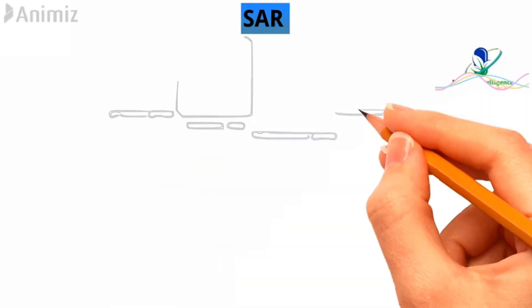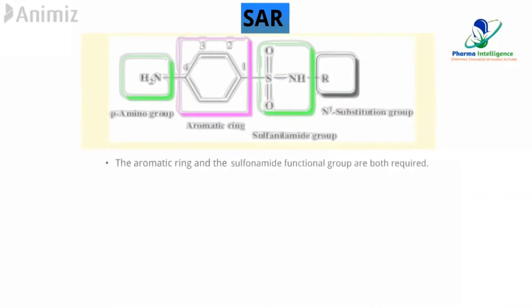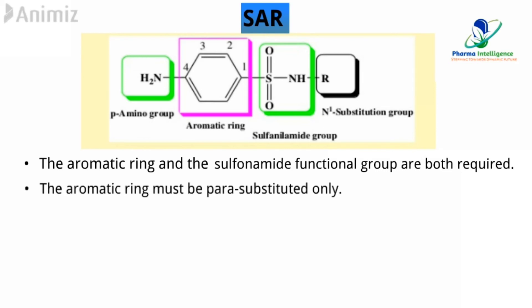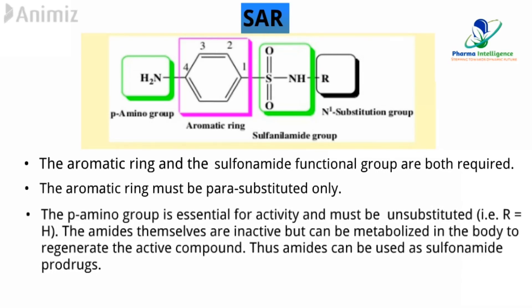We will now see the structure-activity relationships of sulfonamides. The aromatic ring and the sulfonamide functional group are both required. The aromatic ring must be para-substituted only. The p-amino group is essential for activity and must be unsubstituted.